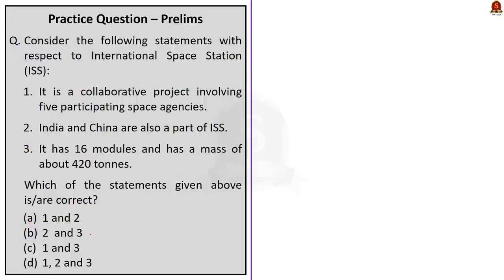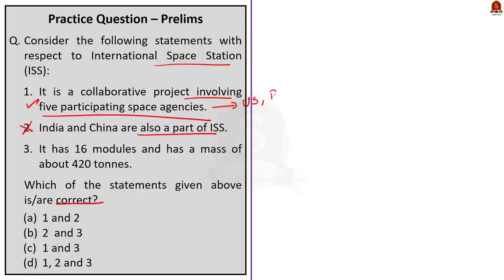Moving on to the second question about the International Space Station. Three statements are given. Statement 1: 'It is a collaborative project involving five participating space agencies' — this is correct. Statement 2: 'India and China are also part of the International Space Station' — this is wrong. The collaborating nations include United States, Russia, Europe, Japan, and Canada. Statement 3: 'It has 16 modules and has a mass of about 420 tons' — this is correct. So statement 1 and statement 3 are correct. The correct answer is option C, 1 and 3 only.